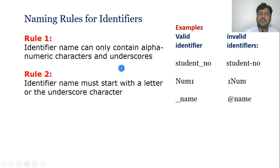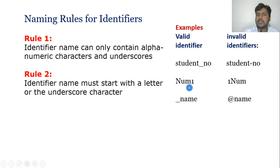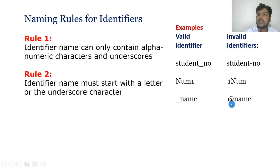Rule two: the identifier must start with a letter or the underscore character. For example, if I type 'num1' it is accepted, because as per the rule we can include a number in the identifier, but the first character should not be a number. So the first character should be a letter or underscore. Using an underscore at the start is also valid, but using a special character at the start is not valid.